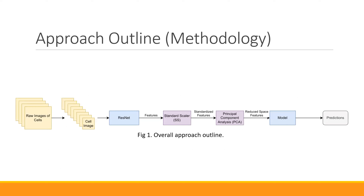Here's a high-level view of our approach. We take the raw images from our dataset and obtain the individual images of each cell. We utilize a ResNet to extract features from those images, then standardize those feature values and reduce their dimensionality before passing them into one class classification models to make predictions and evaluate performance.